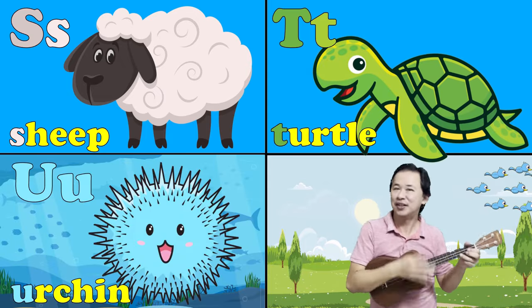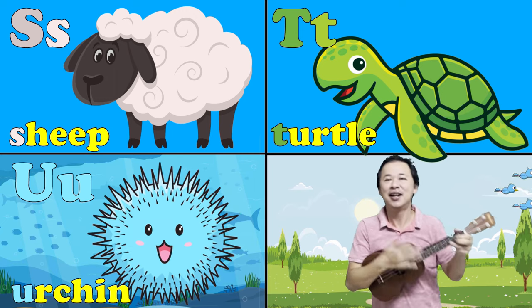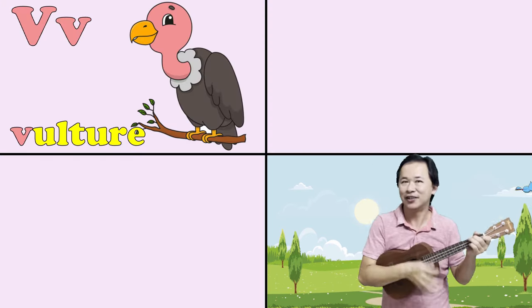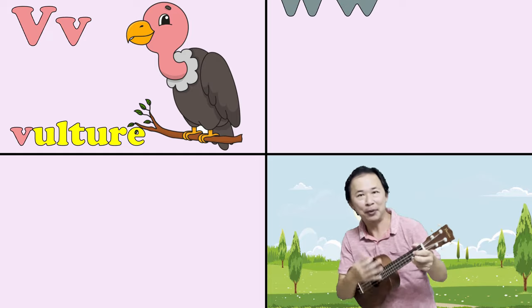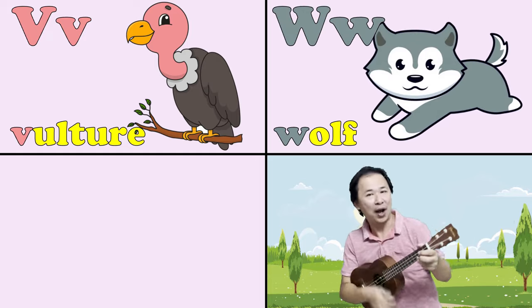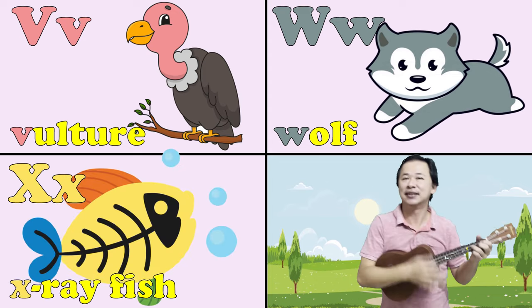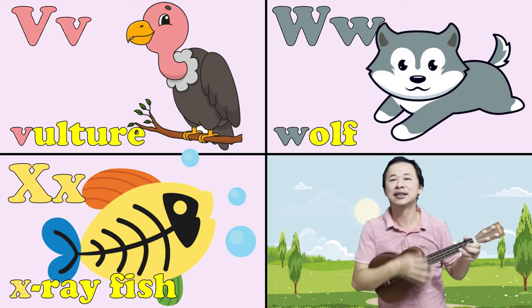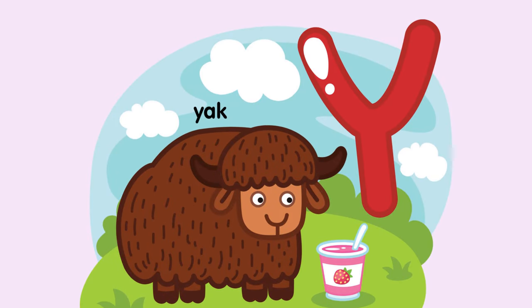U is for urchin, u. V is for vulture, v. W is for wolf, w. X is for x-ray, x.